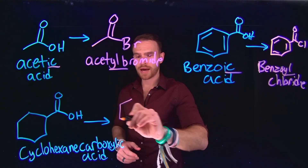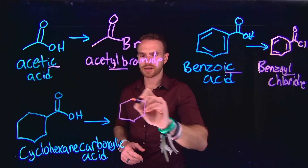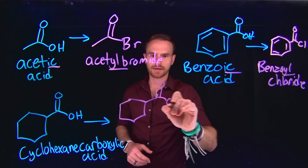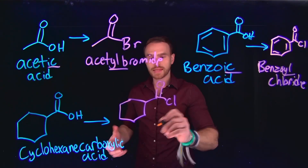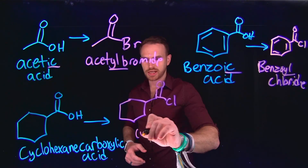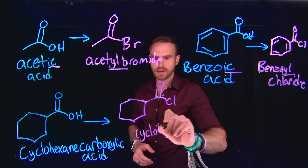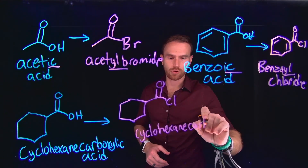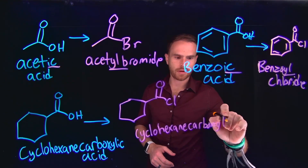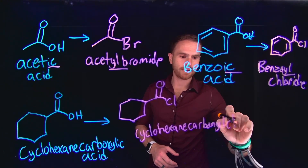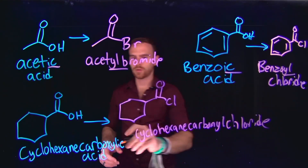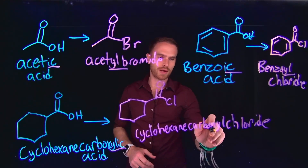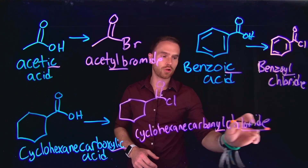Similarly, cyclohexane carboxylic acid, if it is to become an acid chloride, the name simply changes to cyclohexane carbonyl chloride. So again, we're changing the -ic acid ending into -yl chloride.